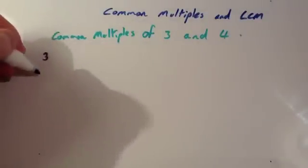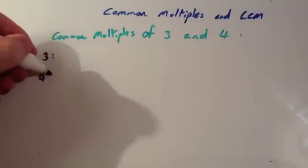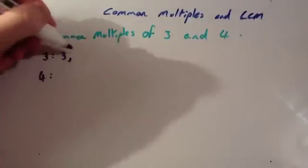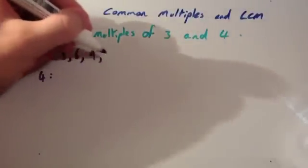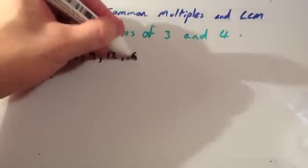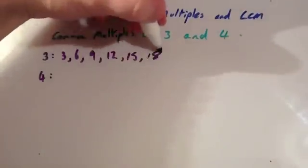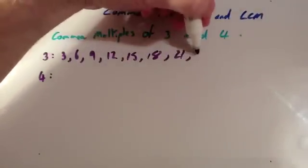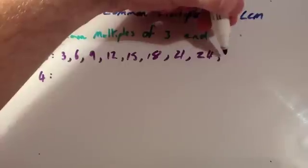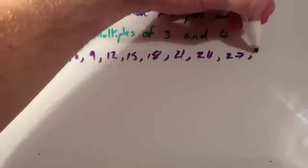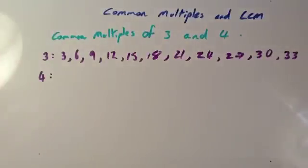So let's start writing down the multiples of 3 and the multiples of 4. The multiples of 3: 3, 6, 9, 12, 15, 18, 21, 24, 27, 30, 33, and so on. And they would carry on forever. We'll just stop there.